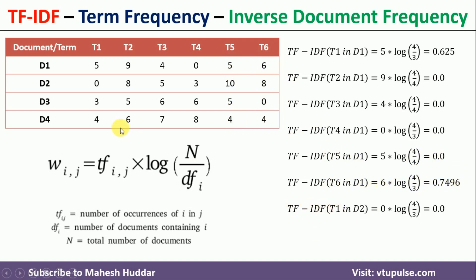In the same way, we can calculate the TF-IDF of T1, T2, and all other terms across D2, D3, D4, and so on for all terms. This is the simple process for calculating TF-IDF — Term Frequency Inverse Document Frequency. These numerical values can then be used to perform text or document classification. I hope you understood how to calculate the TF-IDF score for each term. If you liked the video, please like, share, subscribe, and press the bell icon for regular updates.